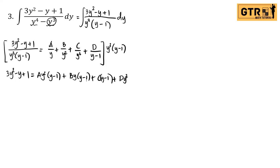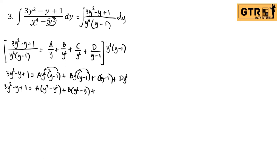Now simplify and distribute A and B. Expanding: A(y³ - y²) plus B(y² - y) plus C(y - 1) plus Dy³. Our highest exponent is y³, so we equate coefficients for y³, y², y, and the constant.